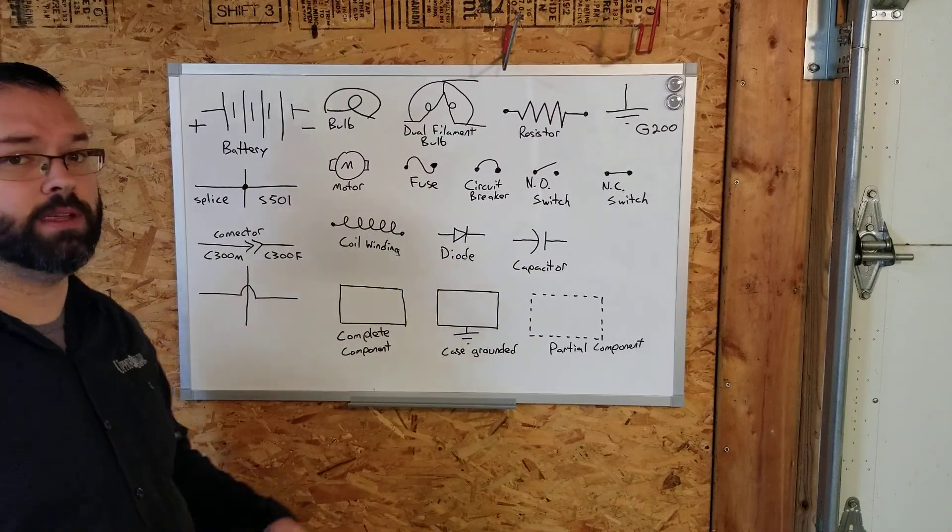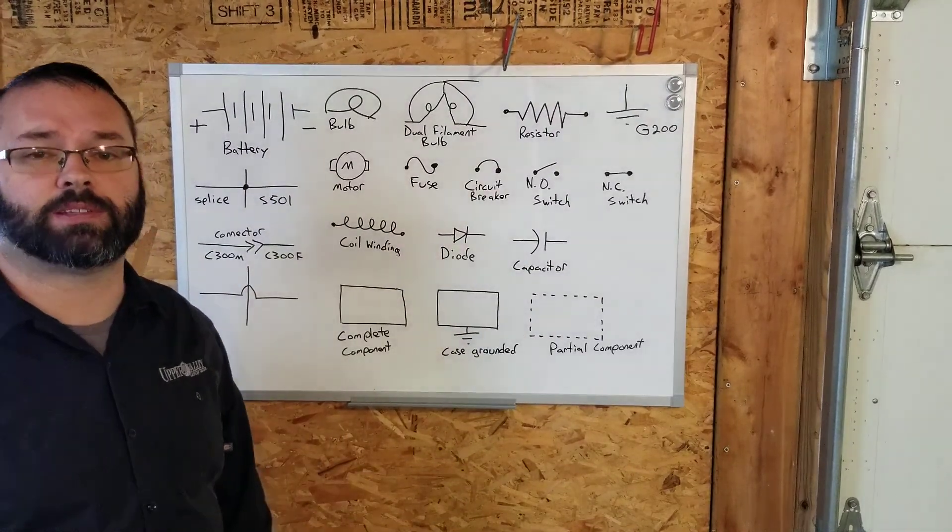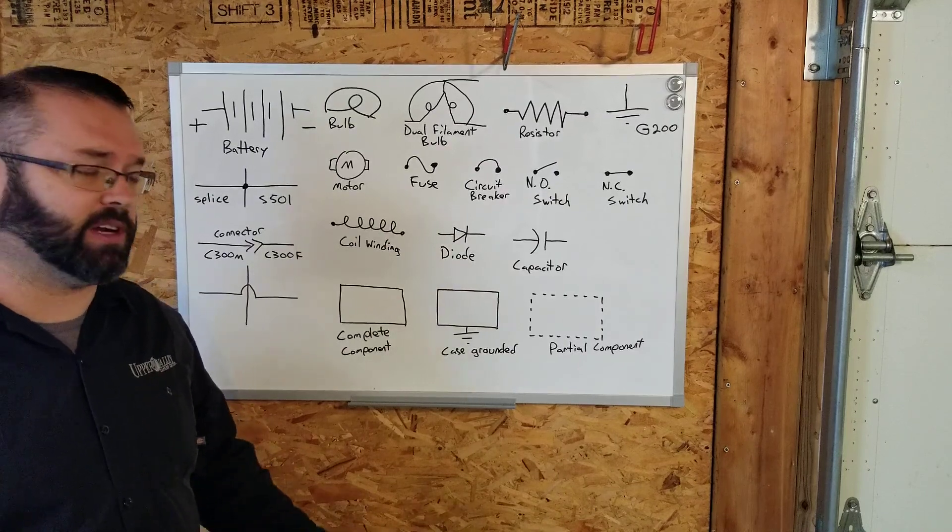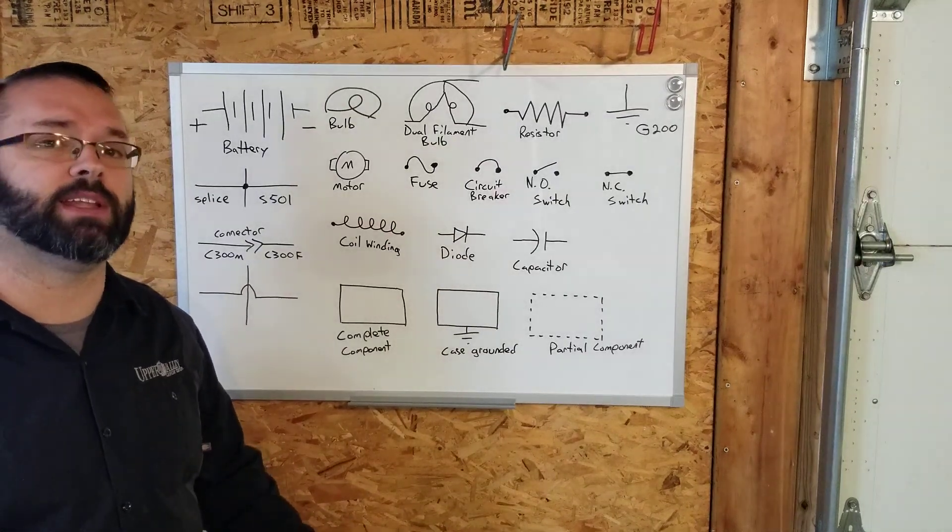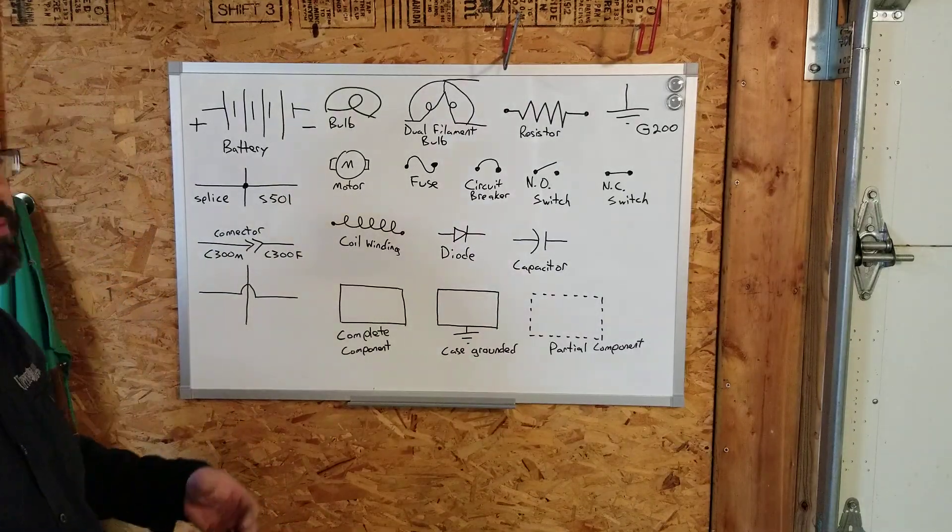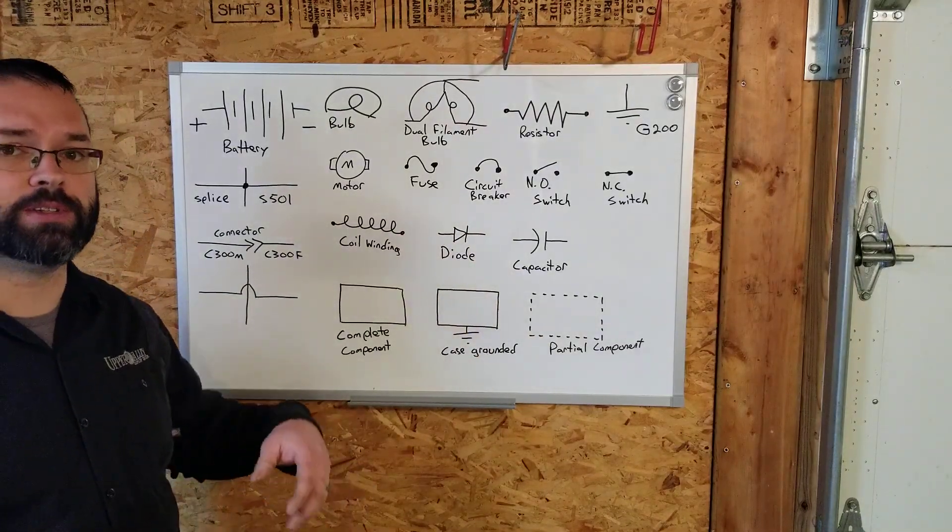Hey guys, we're going to talk about some of the symbols for components you're going to commonly see. There are some on here that we're going to cover later, such as variable resistors, potentiometers, and relays. Most of the components you're going to see in our diagrams are things you're going to see in the automotive world.